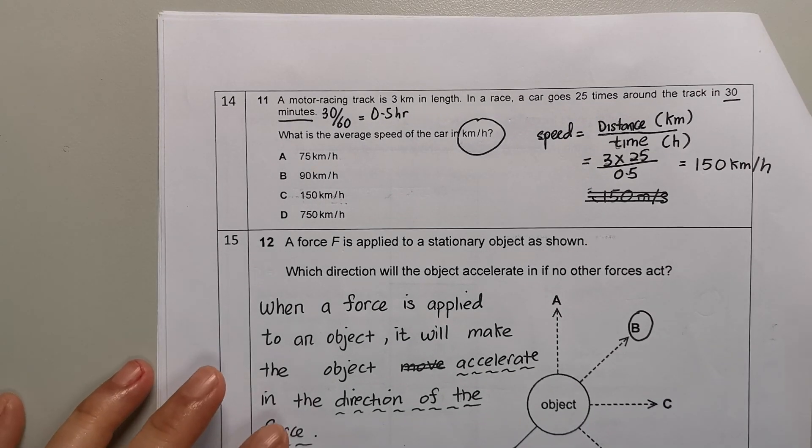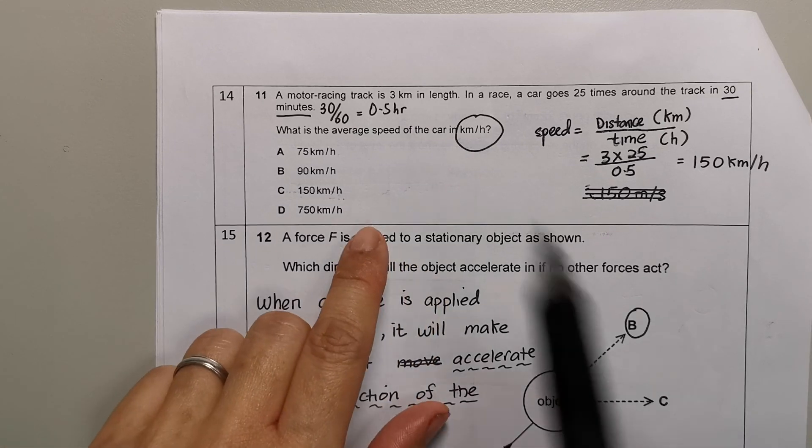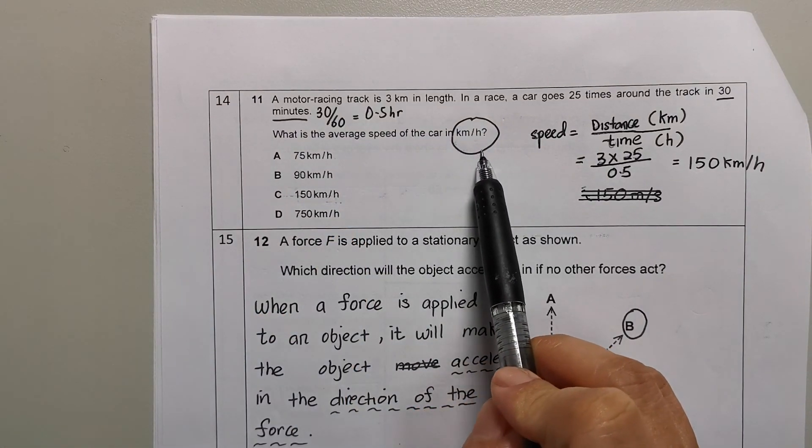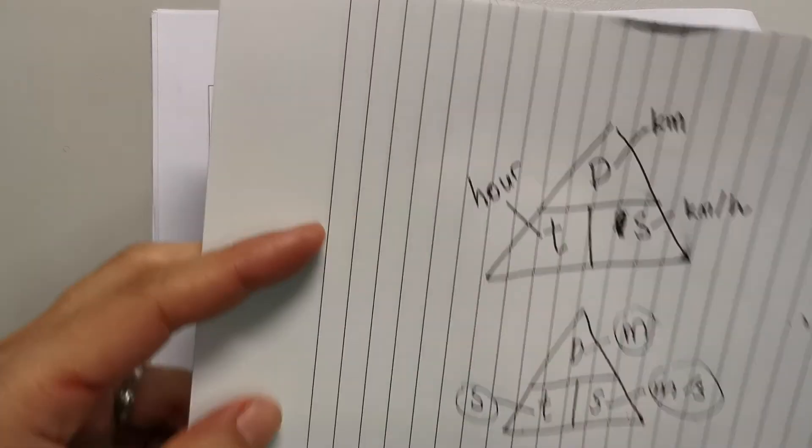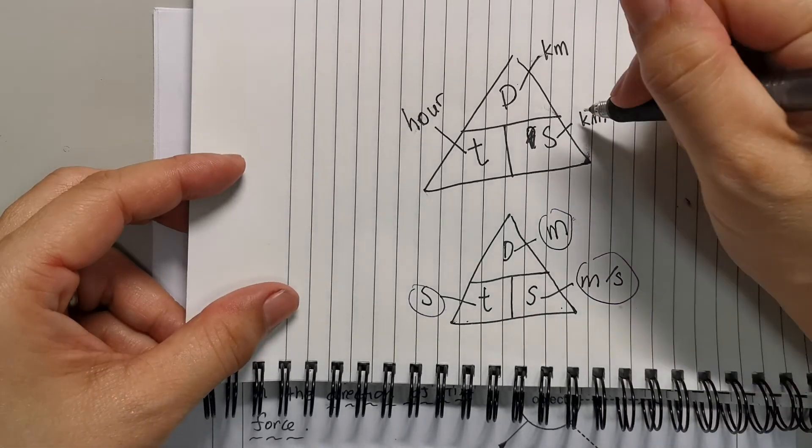Right, question 14. Question 14, again let's take note they want you to find the average speed in kilometers per hour. Remember, just now we did this. I said that when you are using this formula, if you are using...